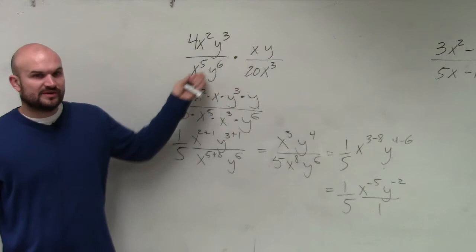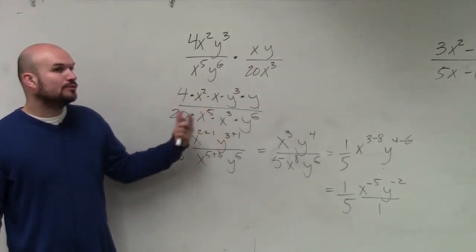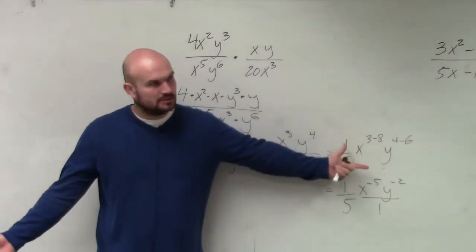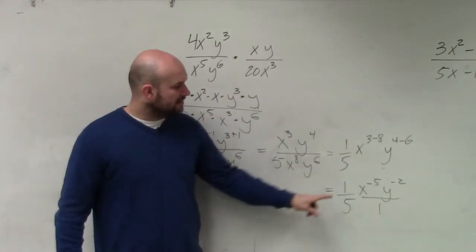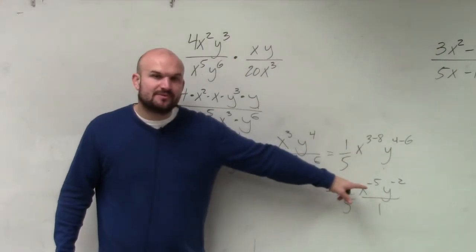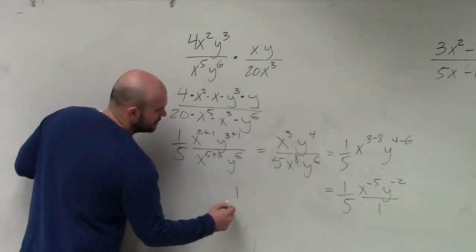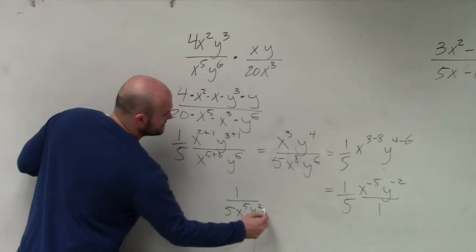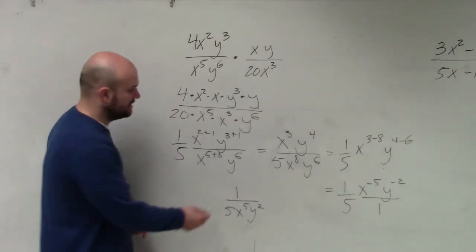All you do is rearrange: when you do the product rule, you add the powers; when you do the quotient rule, you subtract the powers. I'm just showing you every single step. The last rule is we cannot leave negative powers — we have to write them with positive powers. So my final answer is going to be 1 over 5x to the fifth, y to the second. To write them as positive powers, we rewrite them in the denominator.